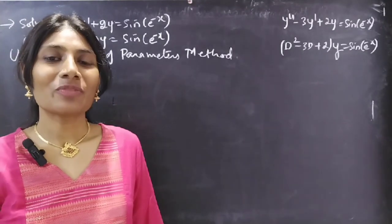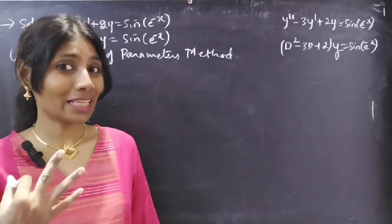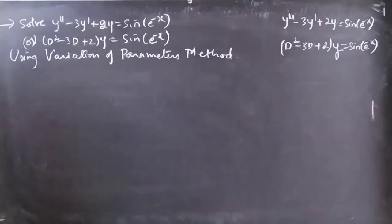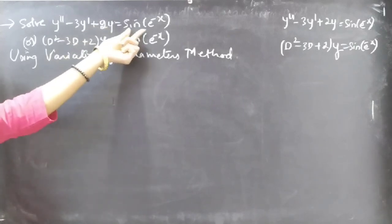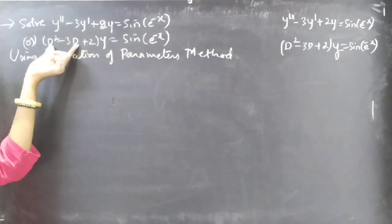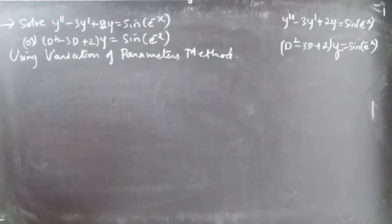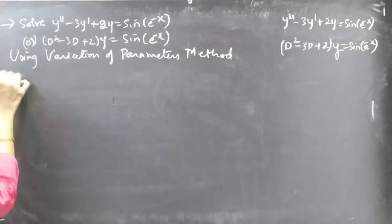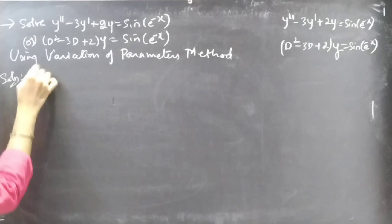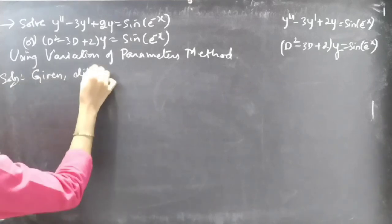Hello everyone, this is Zeya Kalpana here. In this video we are going to solve the differential equation using variation of parameters, part 3. Let's get going. Problem: solve y'' - 3y' + 2y = sin(e^(-x)), using the variation of parameters method. Here we are given a differential equation of order 2.